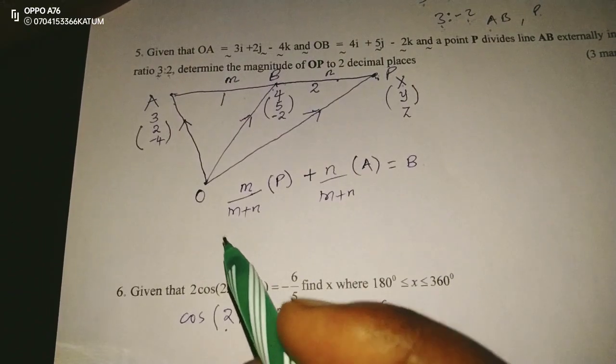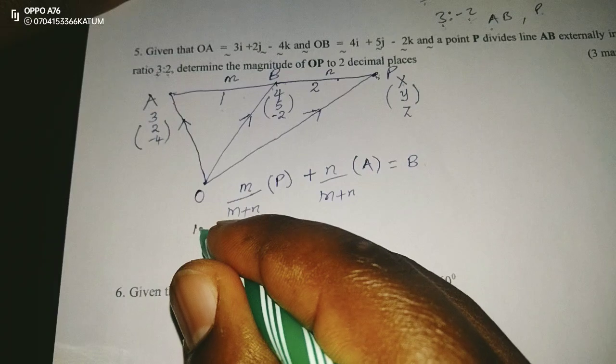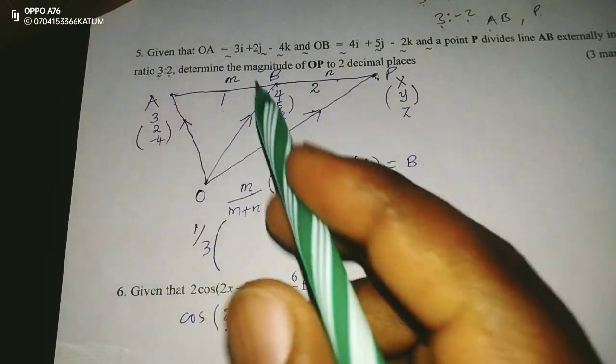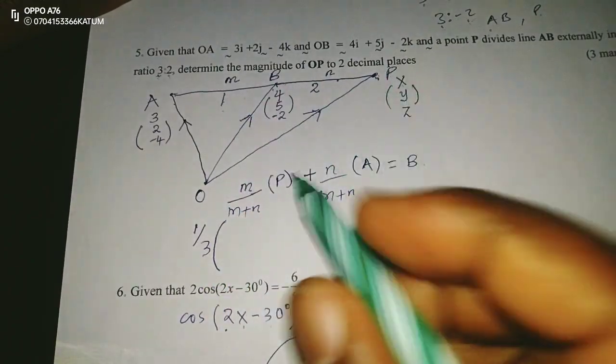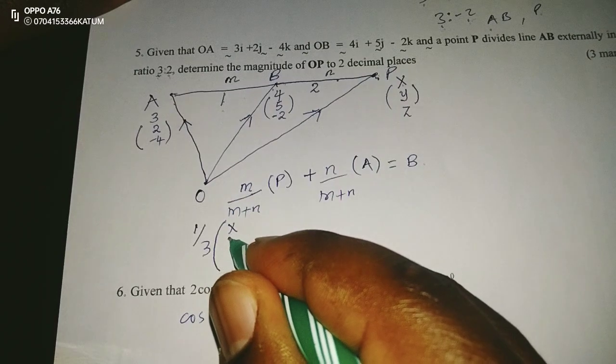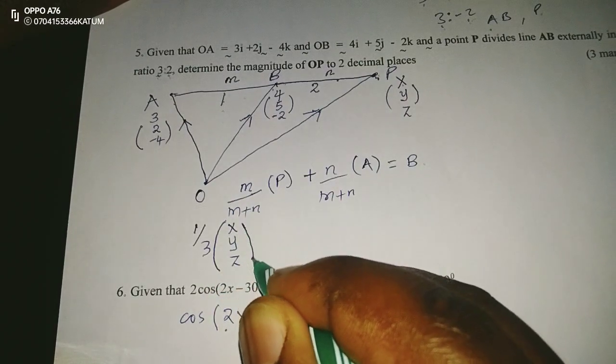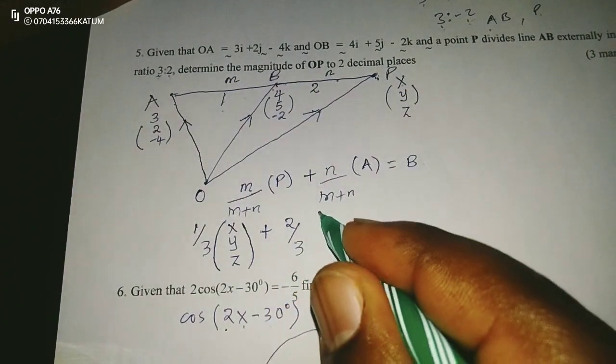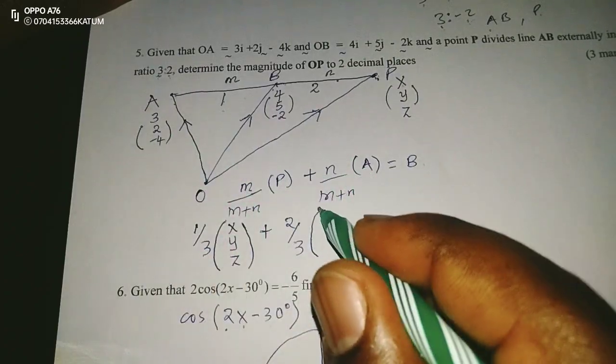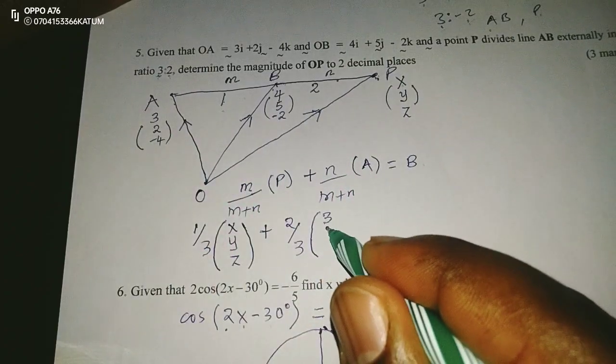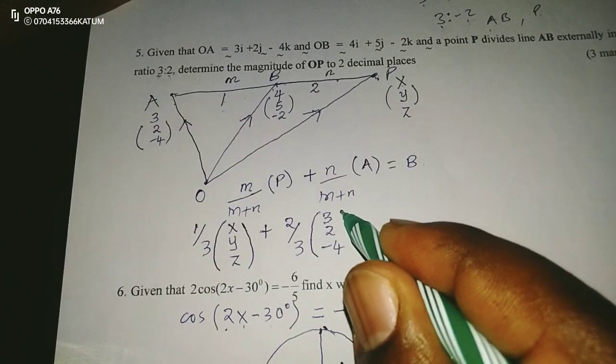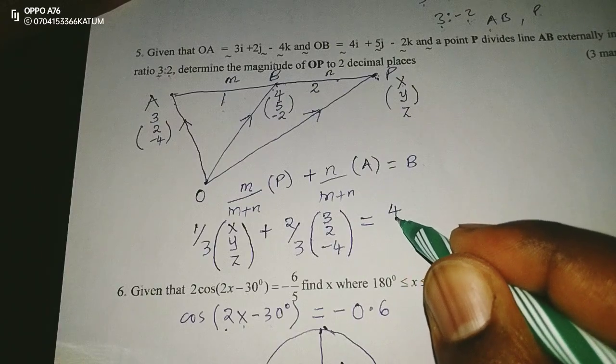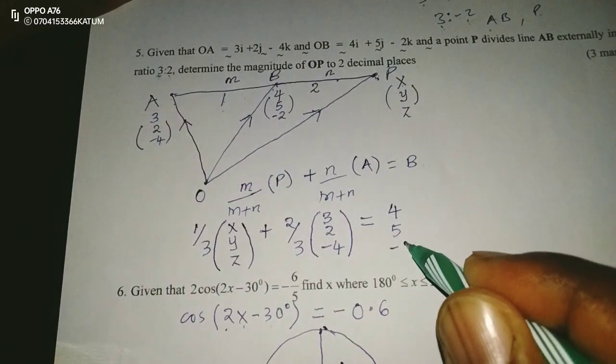So that said, it means we can apply it by picking one out of the total proportions, which are three, but now we multiply a third, because we've picked one with the vector here. This is (X, Y, Z). When we add, this is going to be two out of three, times the opposite vector here, that is A (3, 2, -4). This is going to be vector B, which is (4, 5, -2).